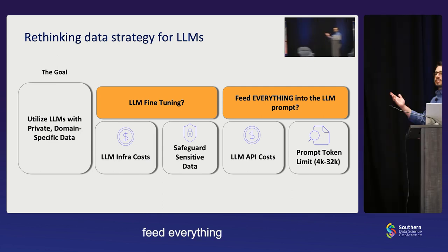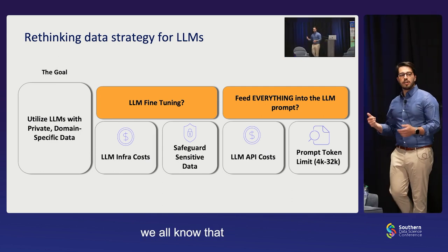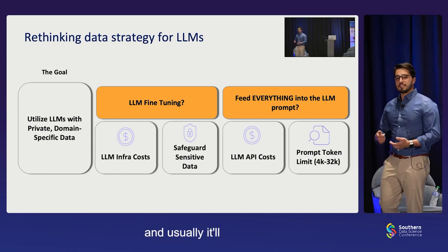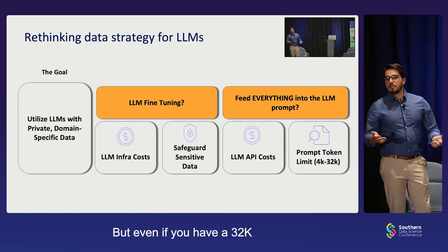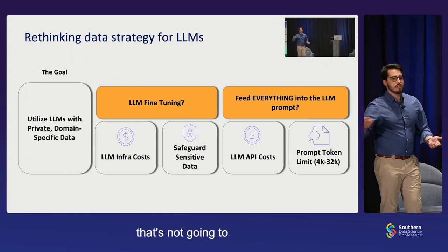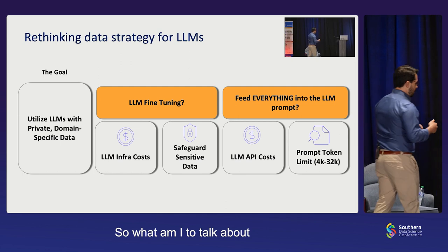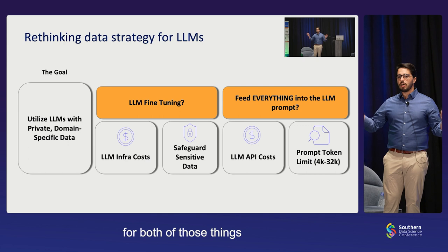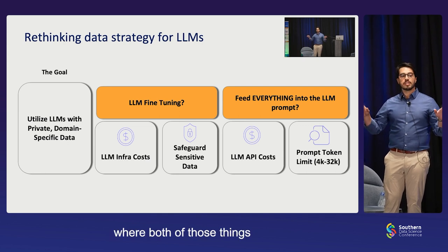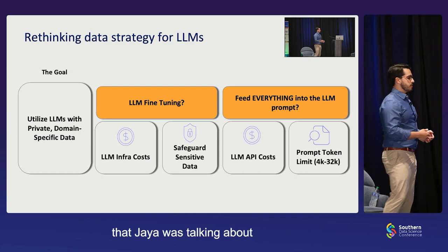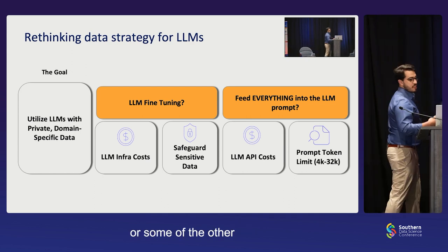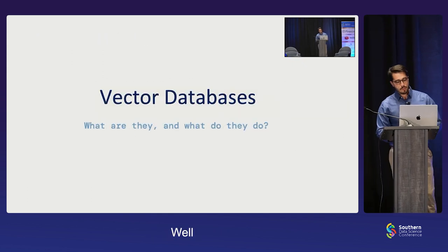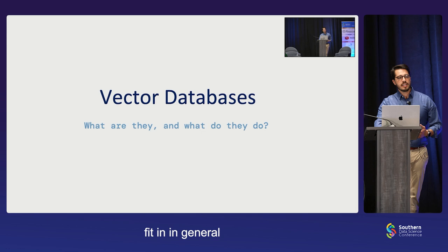Or do I just feed everything into the prompt? Because in the prompt we can put a couple of examples and some context, and usually it'll figure it out. But even if you have a 32K context window, that's not going to solve everything. So what I'm going to talk about today is the middle ground between these two, because there are times and places for both of those things. And this is the space where vector databases fit in, in general.